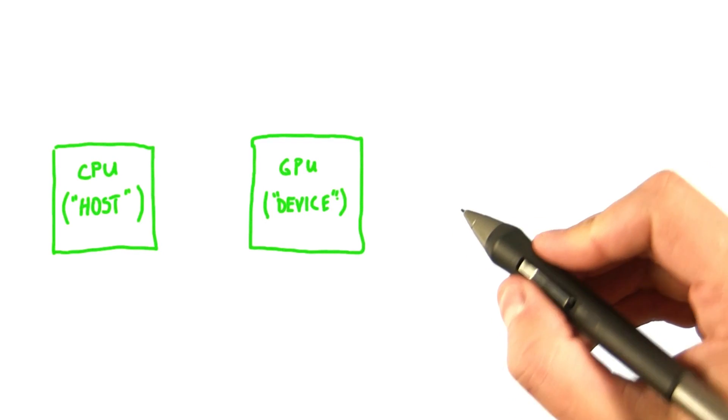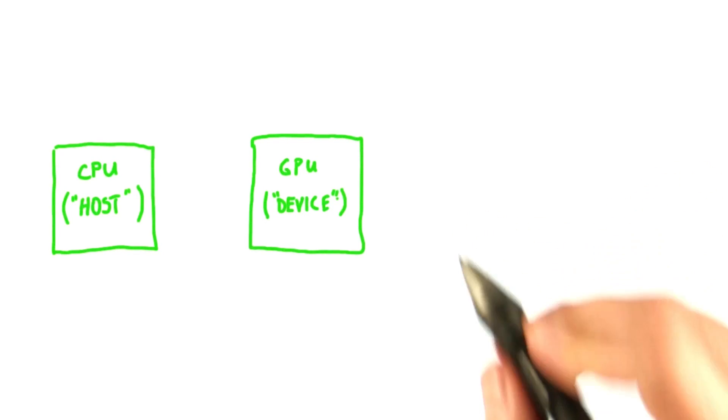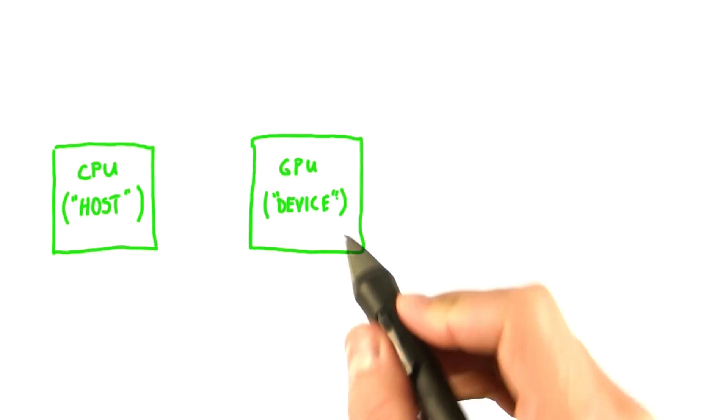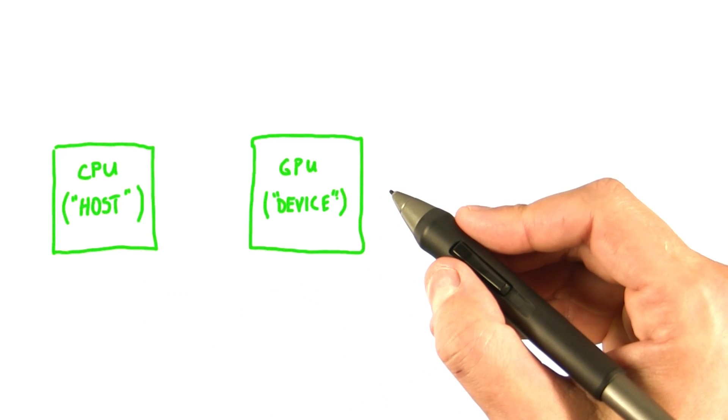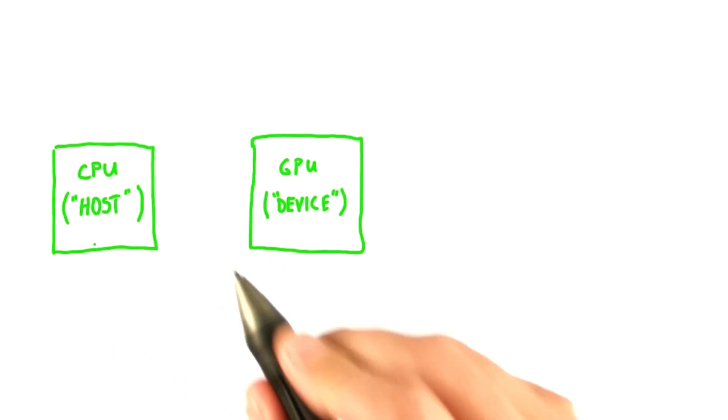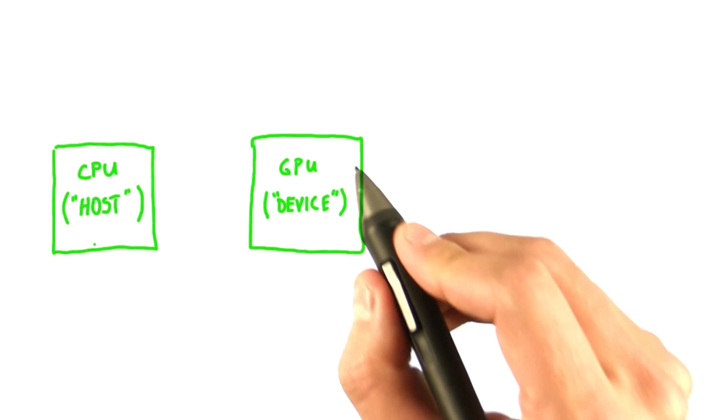The computers we're using in this class are termed heterogeneous. They have two different processors: the CPU and the GPU. If you write a plain C program, your code will only use the CPU to run your program. So how do we write code that will run on the GPU?